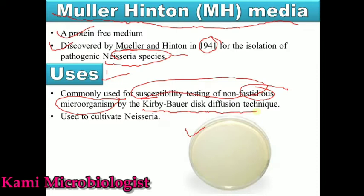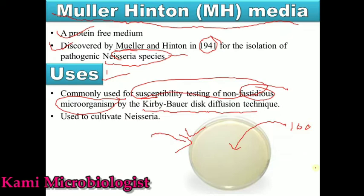First of all, using this media we add 100 microliters of bacterial suspension. Then we spread it using a glass rod or culture swab — through either of these materials the bacterial suspension will be spread over the plate. After the bacterial suspension is spread over the entire plate, this is called a bacterial lawn. Next, after the bacterial lawn is made, the antibiotic discs are placed on the plate.